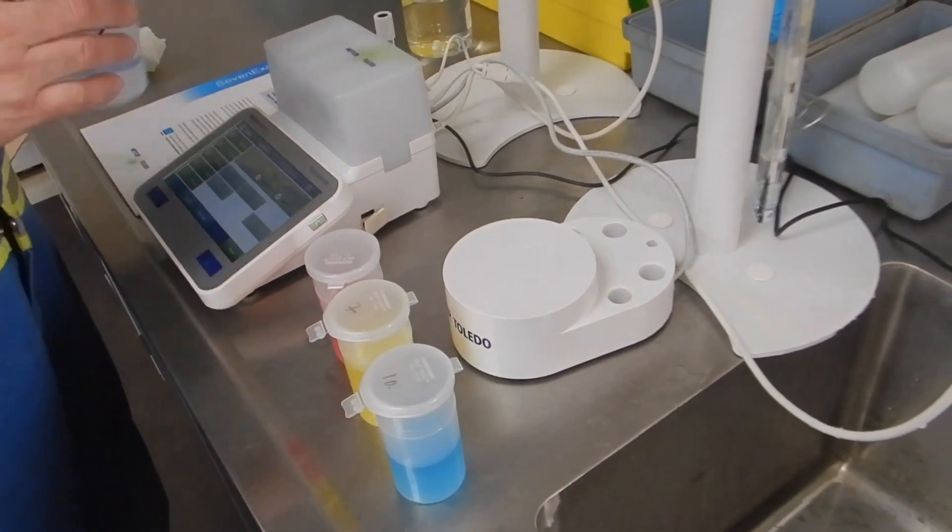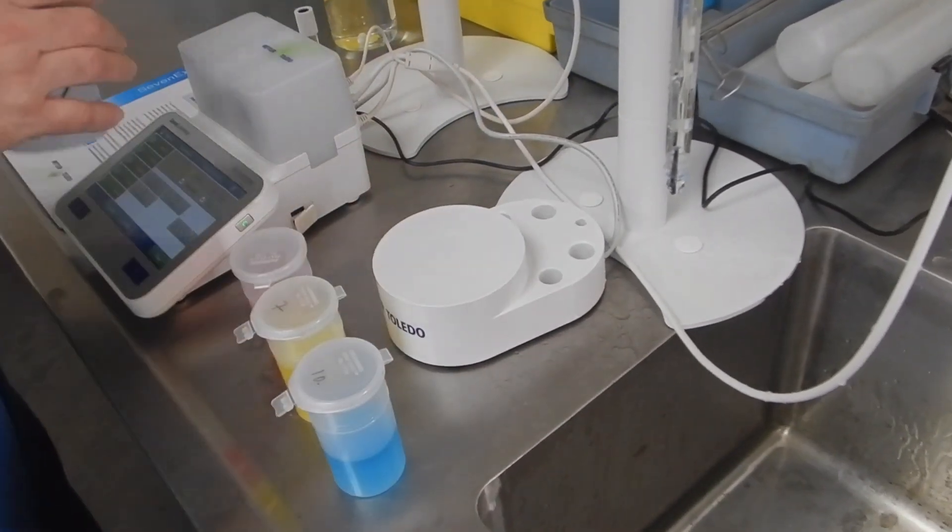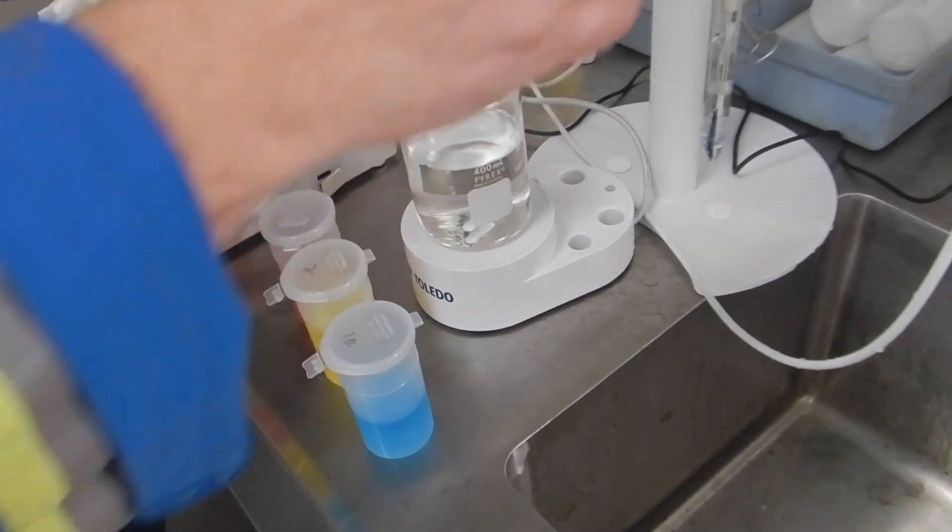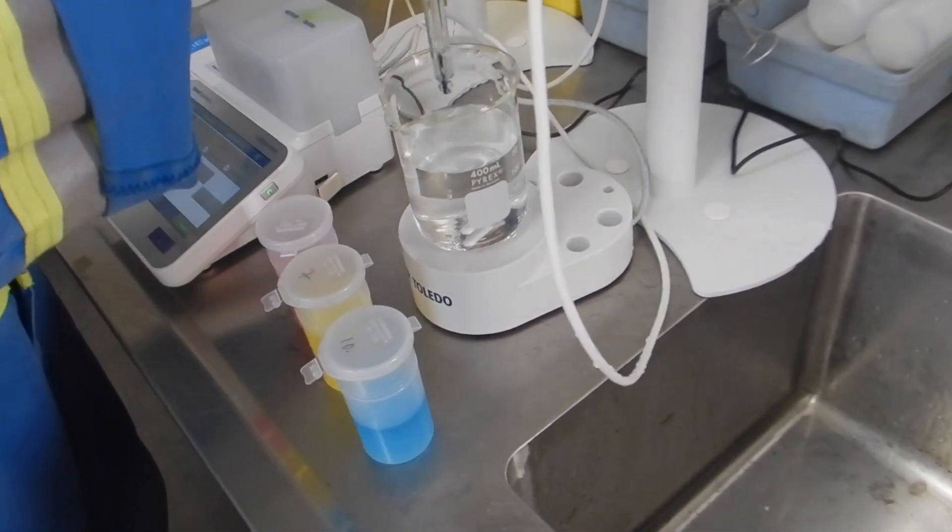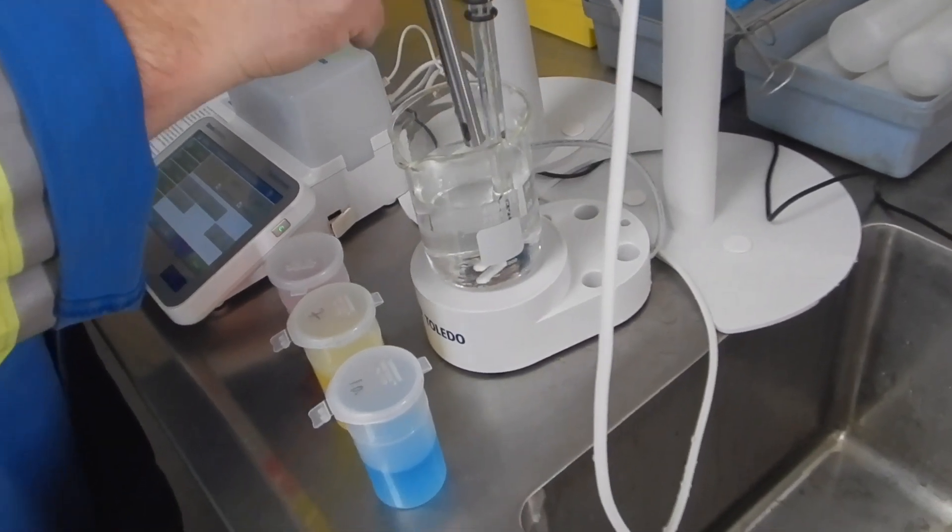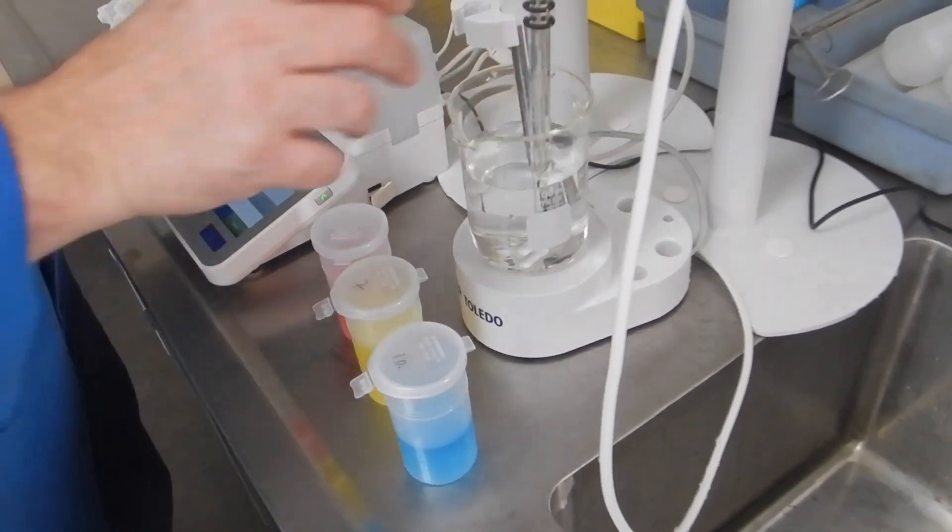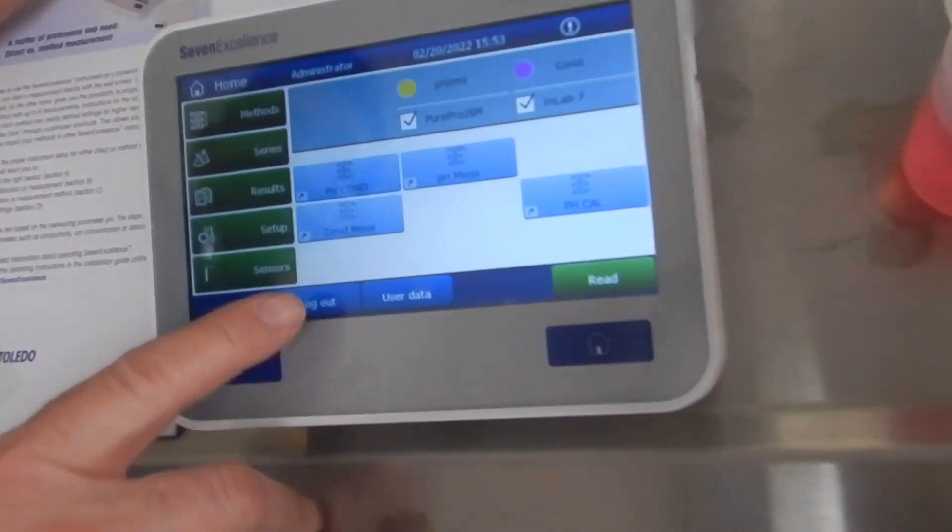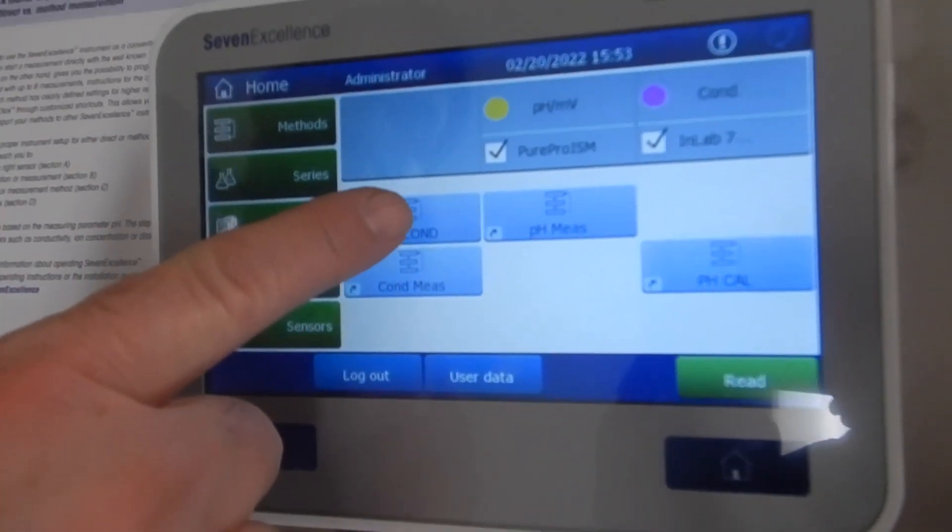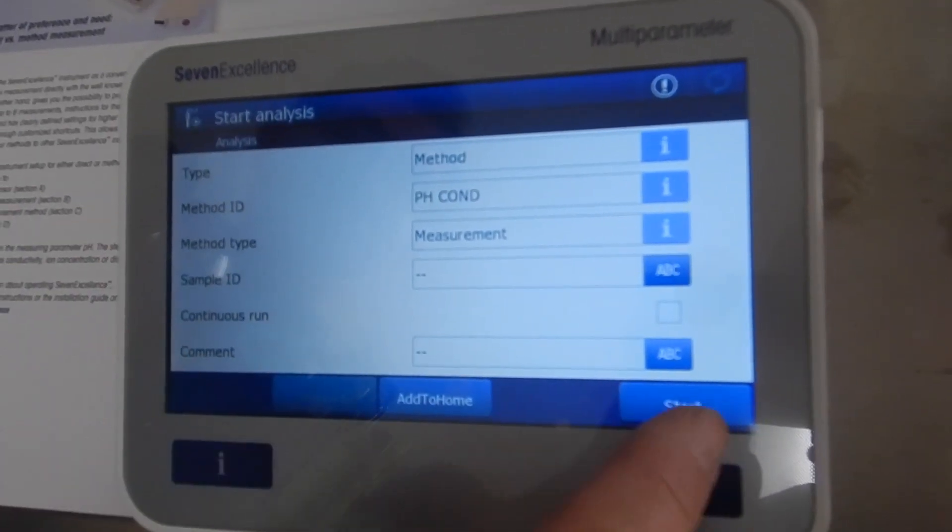you can go on to a measurement. Again, just make sure the cleaner everything is, the better measurement you're going to get. So we'll just put this into the solution, okay. And this meter is set up with a quick button for pH conductivity. It's set up so that the stir comes on. Hit that button, hit start, and you'll see the stirrer goes on.